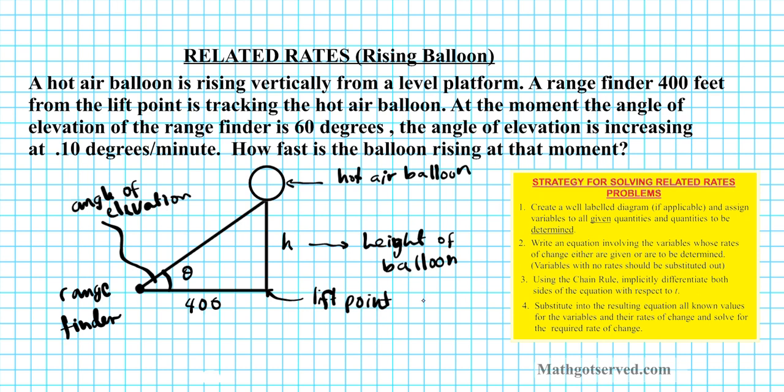Okay? Because we want to write an equation involving those rates. So let's look at the problem. We have, let's see, the angle of elevation is increasing at, so angle of elevation increasing, this piece right here, angle of elevation increasing, is dθ/dt, instantaneous rate of change of the angle of elevation. Okay? This is the given rate. Okay? The given rate.